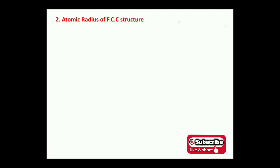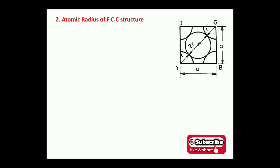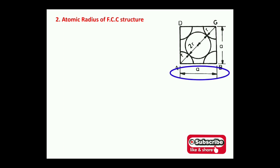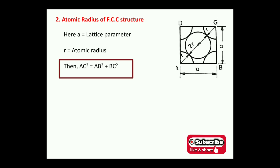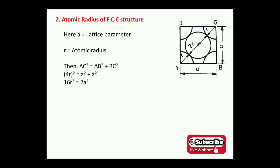For the FCC structure, the atomic radius is derived from the face diagonal. The diagonal equals r + 2r + r = 4r. Using the Pythagorean rule: (4r)² = a² + a², so 16r² = 2a². Solving gives r = a√2 / 4.